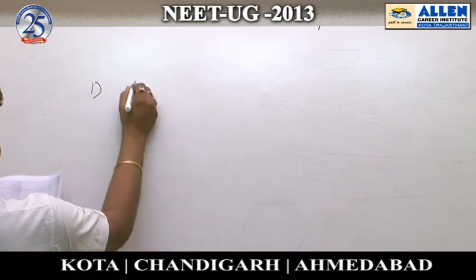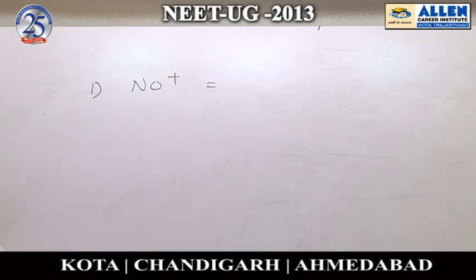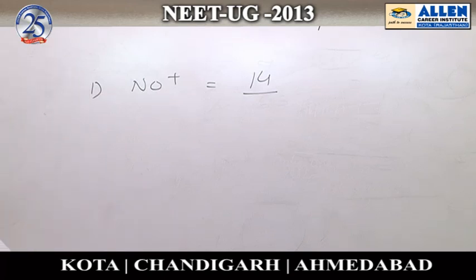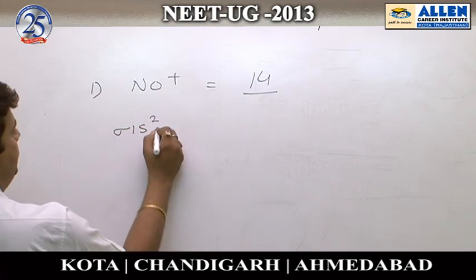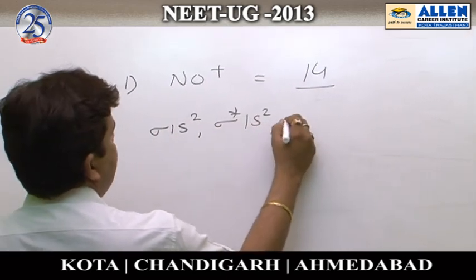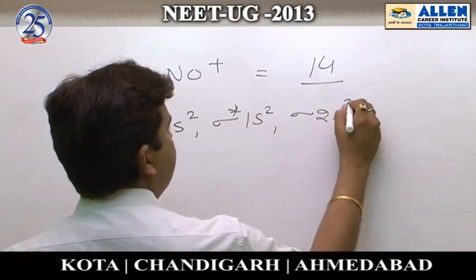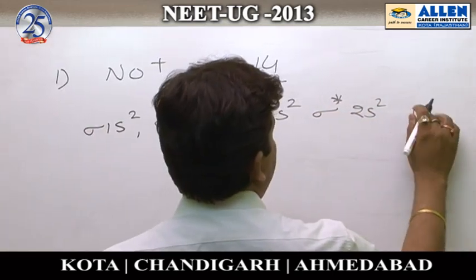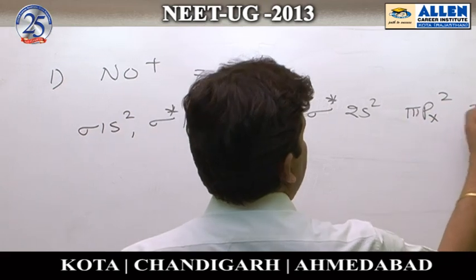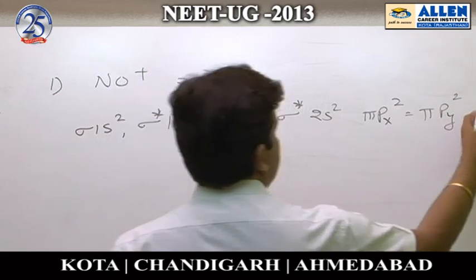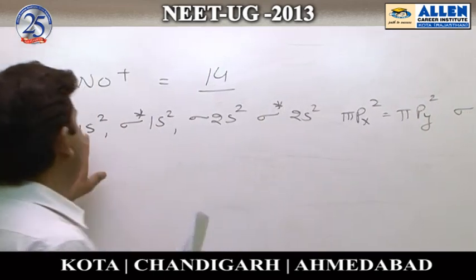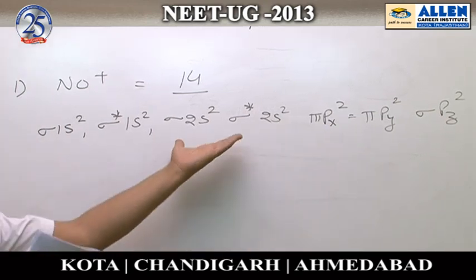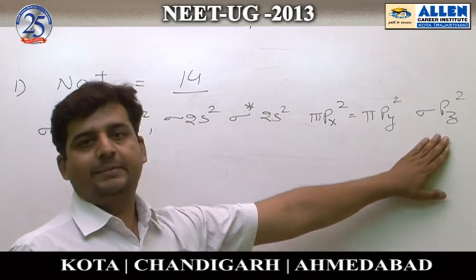Option 1: NO⁺. The total number of electrons is 7 + 7 = 14. Using molecular orbital theory, the configuration is: σ1s² σ*1s² σ2s² σ*2s² π2px² π2py² σ2pz². Total electrons: 2+2+2+2+2+2+2 = 14. There is no unpaired electron, so NO⁺ is diamagnetic.